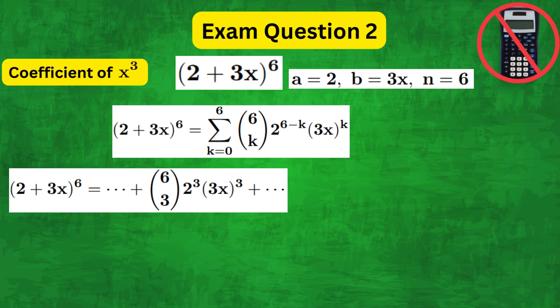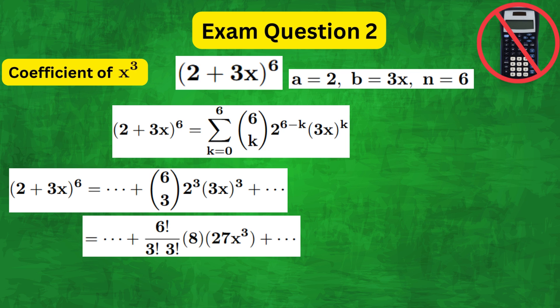Now 6 combination 3 is just 6 factorial over 3 factorial times 3 factorial, which is 6 times 5 times 4 over 1 times 2 times 3, multiplied by 2 cubed which is 8, multiplied by 3x whole cubed which is 27x cubed.